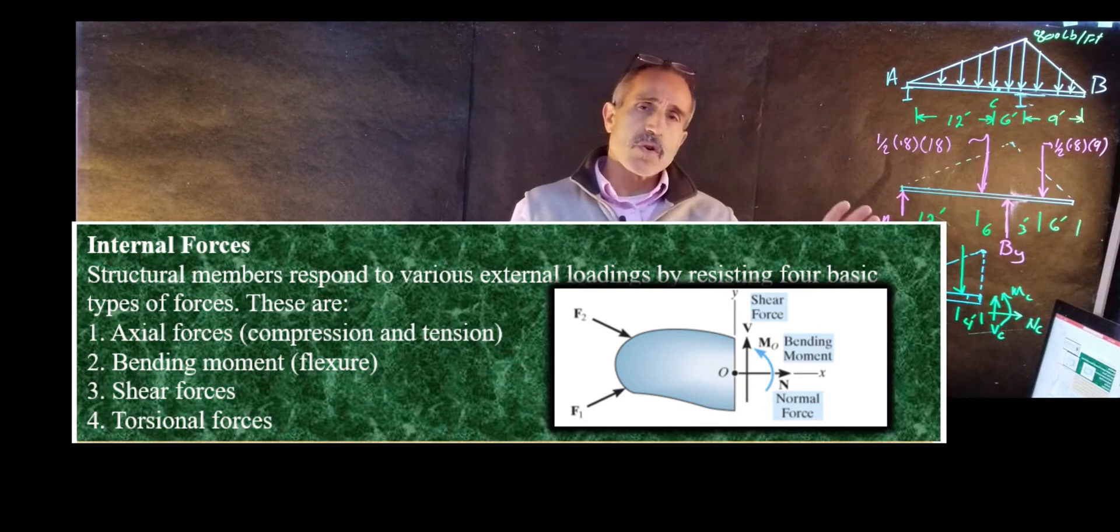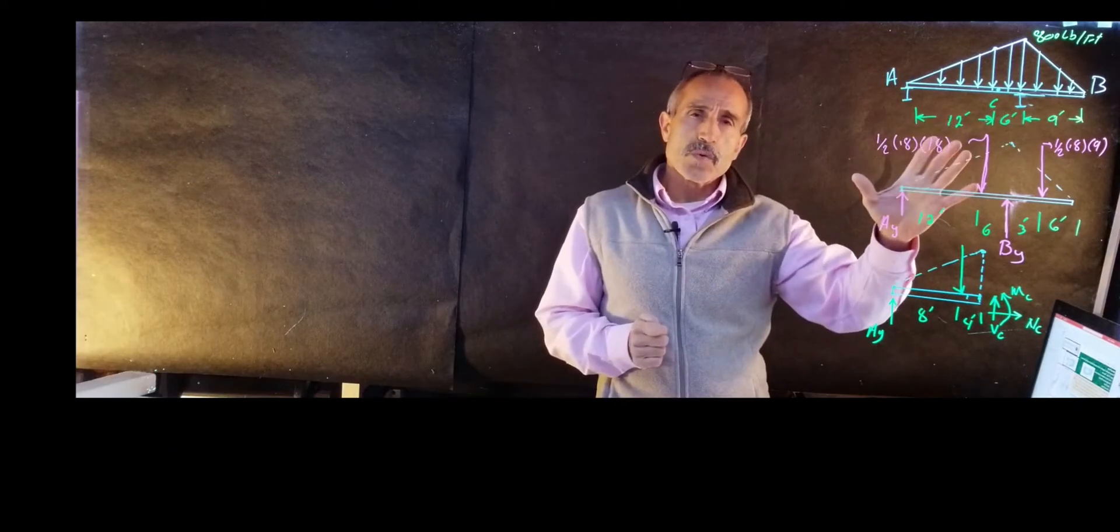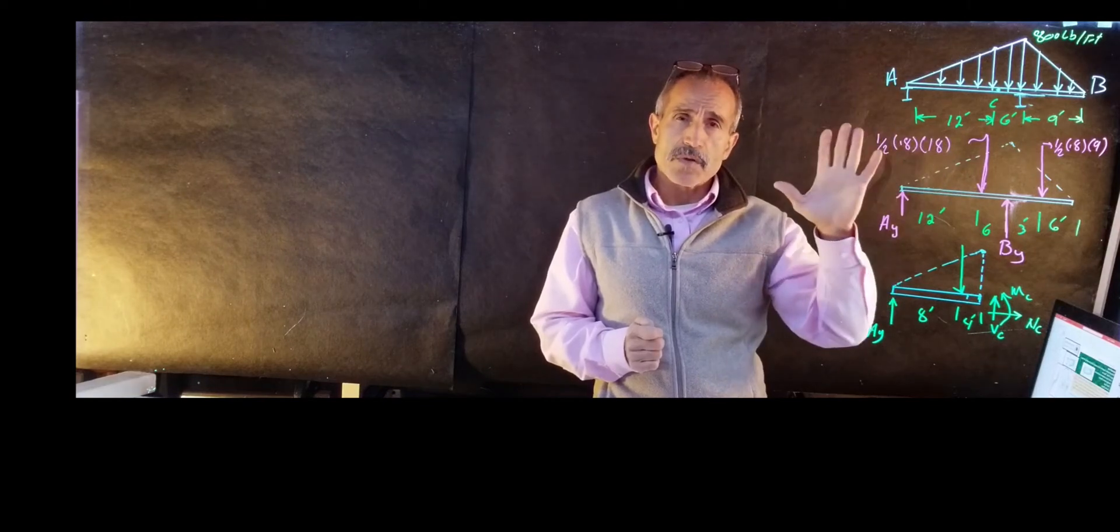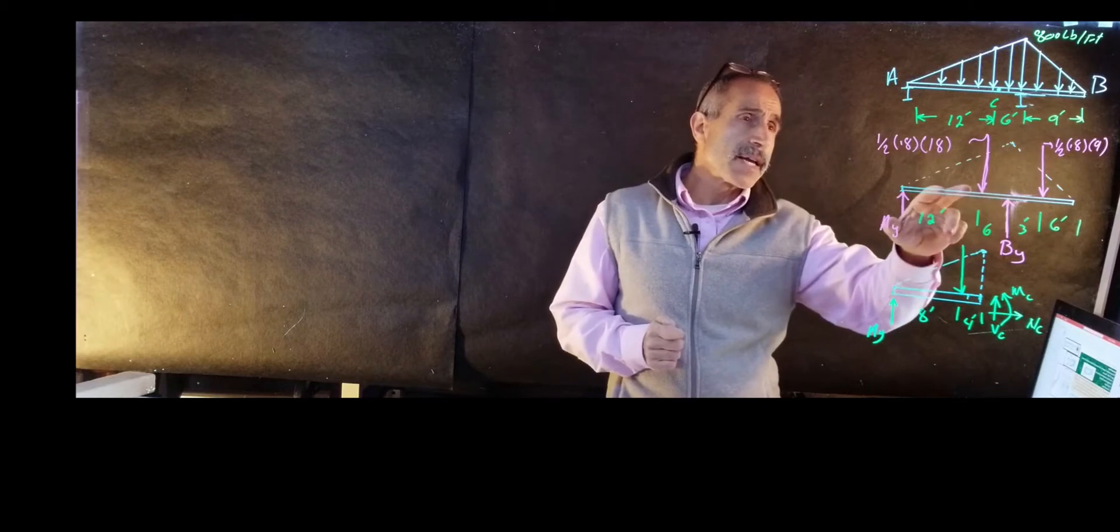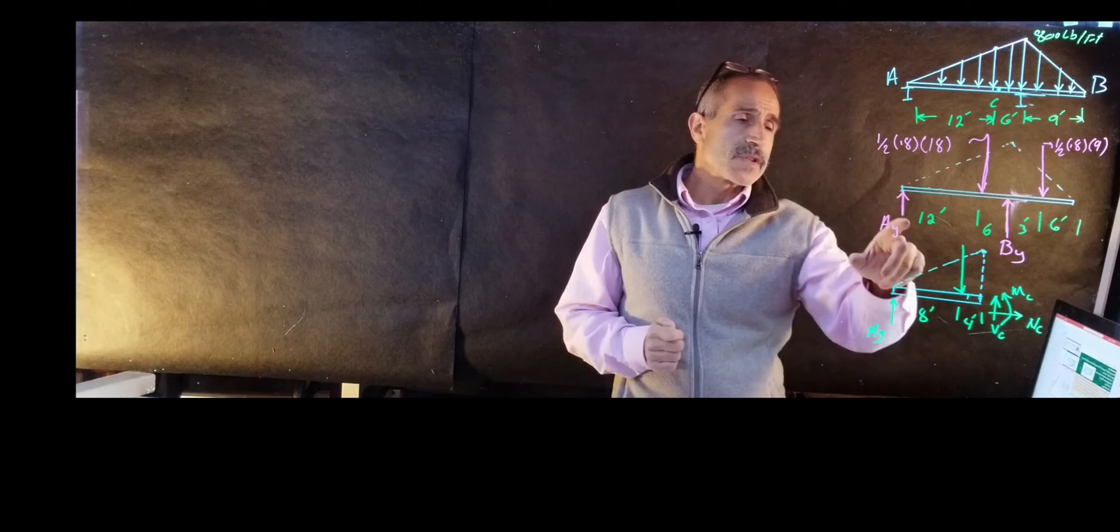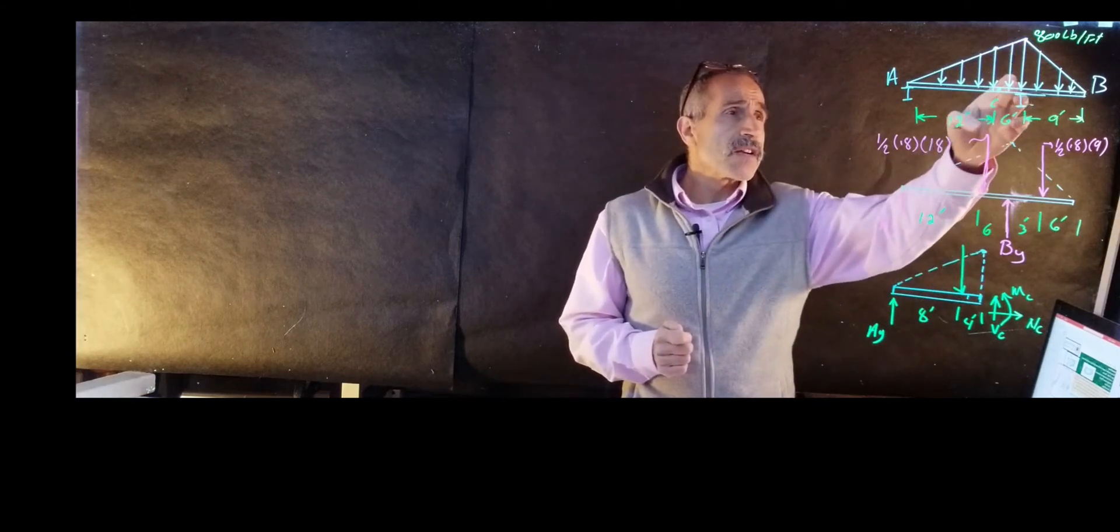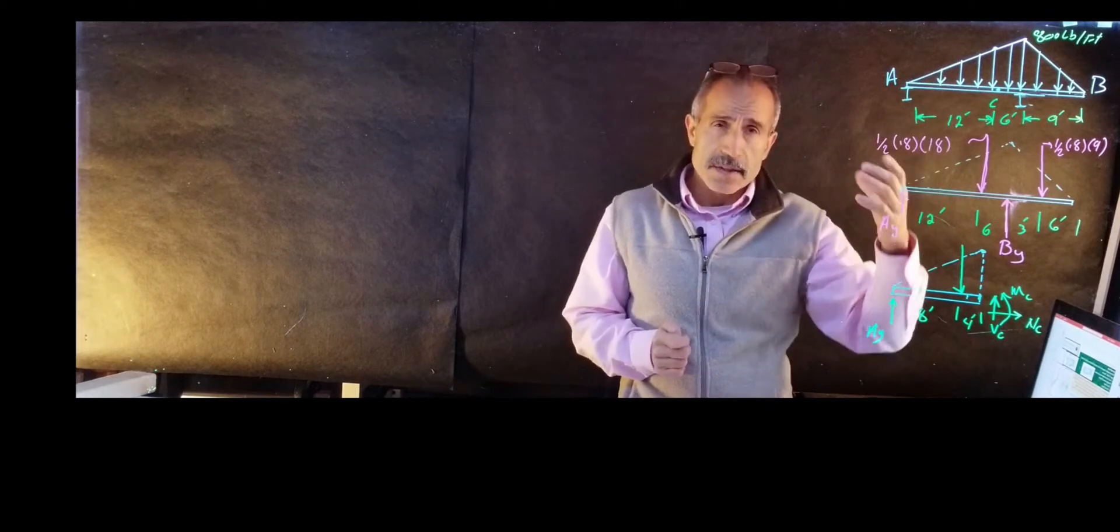So first, let's solve this problem. When you have a problem like this, the first thing you want to do is draw the free body diagram. That's your first step. So I'm going to replace the support system with a single force, Ay and By. Then I'm going to take this triangle first, convert it to uniform load, convert it to a concentrated load. It's easier to deal with.